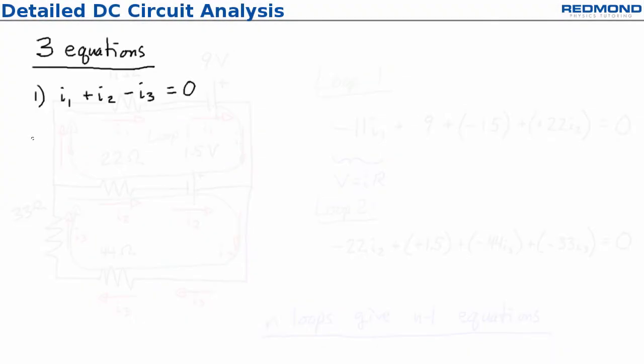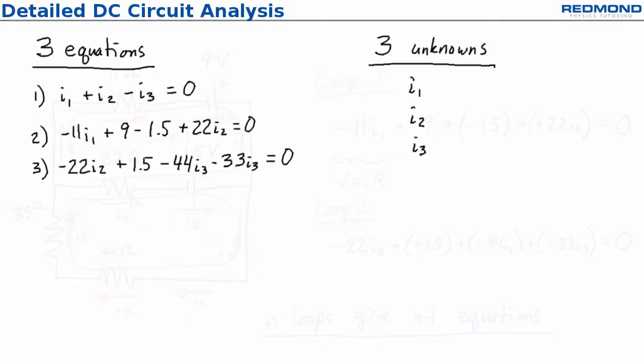Now I have three equations and three unknowns. The physics part is done, and all that remains is some algebra to solve for the unknowns. Gauss-Jordan elimination works well for solving these equations, but I'm going to solve them using substitution. I'll speed up the video to save you time.